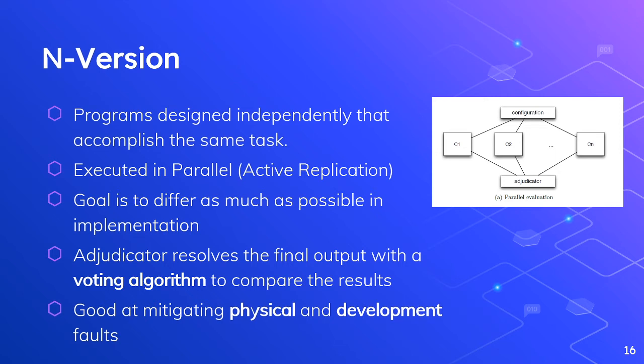The goal of each independent service is to be as different as possible in its implementation. That's because what we're trying to prevent here is development faults. Of course, if it's a physical fault, identical copies would handle hardware failure — but N-version strategy is really trying to prevent development faults. The adjudicator resolves its final output from C1, C2, etc. through some type of voting algorithm to compare the results, and this is going to be good at mitigating both physical and development faults.